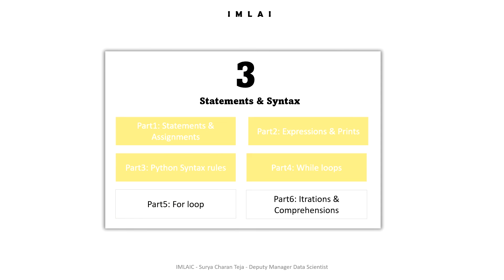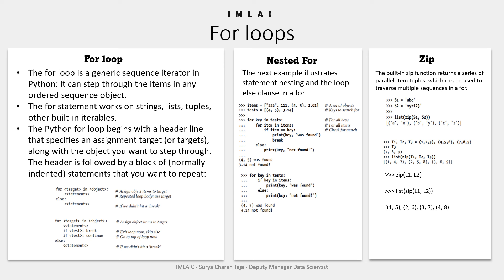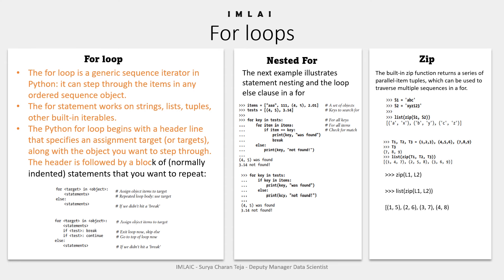Welcome to part 5 - the for loops session of module 3 of my Python course. This session is very important and widely used when working on Python projects. The for loop is a generic sequence iterator in Python, so it can step through the items in any ordered sequence object. The for statement works on strings, lists, tuples, and any other built-in iterables.